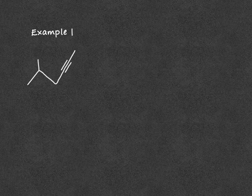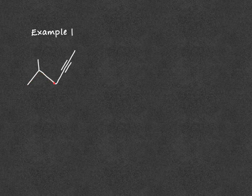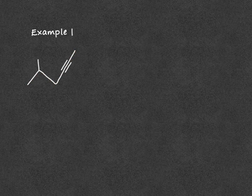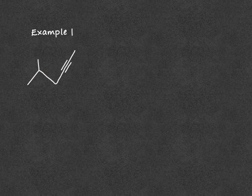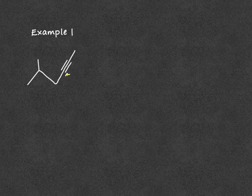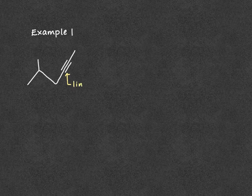In this example we have a straight chain alkyne - we see the triple bond - and we have a branch off of that alkyne. One thing to note here is the linear shape around the triple bond.